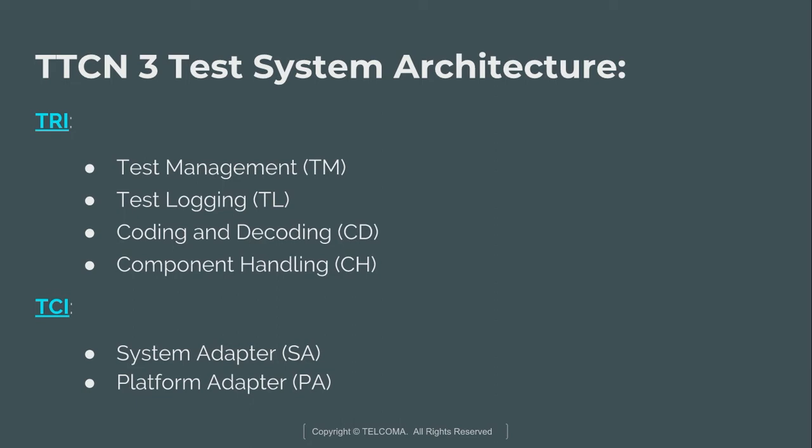The next component is test logging (TL), whose function is to handle all the log events of the test system. We will discuss how to design programs and logging in further lectures. Next is the codec — coding and decoding (CD) — which is used for encoding and decoding data associated with message-based or procedure-based communication within the TE. Component handling (CH) is used to distribute signals and communication between parallel test components.